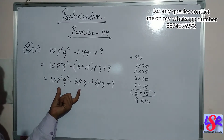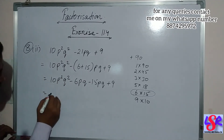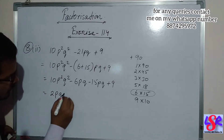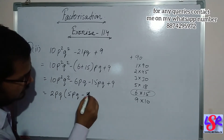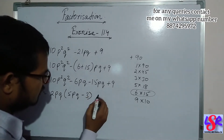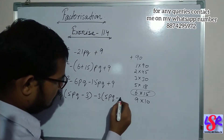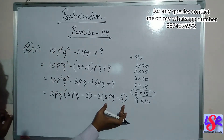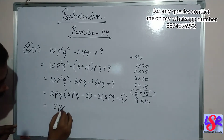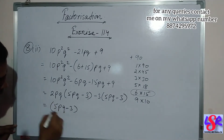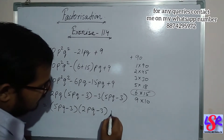Taking 2pq common from the first two gives 5pq minus 3. Taking minus 3 common from the last two also gives 5pq minus 3. Taking 5pq minus 3 as common, the answer is 5pq minus 3 into 2pq minus 3.